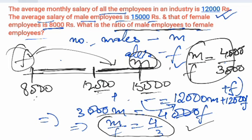This is the shortcut method we can use. The ratio comes out to be the same: 4 upon 3 of male employees to female employees in the industry.